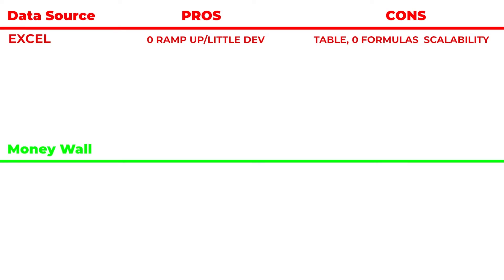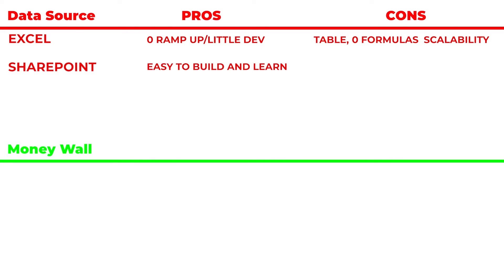The next data source that users will love is SharePoint, which has its pros and cons. Users are already used to using SharePoint today, so there's very little ramp-up time. It's easy to build from a SharePoint list perspective, very low learning curve. It is, again, free — already included in your Office license. So from a data source side, this is a great option.